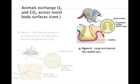Most terrestrial vertebrates have lungs, which are internal sacs lined with moist epithelium. As the diagram indicates, the inner surfaces of the lungs branch extensively, forming a large respiratory surface. Gases are carried between the lungs and the body cells by the circulatory system.